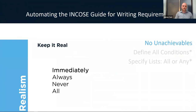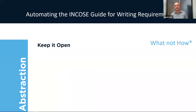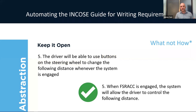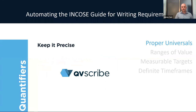Other unachievable words that QVScribe identifies include 'immediately,' 'always,' 'never,' and 'all.' Regarding implementation neutral — you should specify what needs to happen, not how. For example: 'The driver will be able to use buttons on the steering wheel to change the following distance whenever the system is engaged.' The problem is 'buttons on the steering wheel' — that's specifying how it needs to be done. Maybe it would be better with a switch or sliders. The proper way to write it: 'When the full speed range adaptive cruise control system is engaged, the system will allow the driver to control the following distance' — leaving it to the engineers to come up with the best implementation.